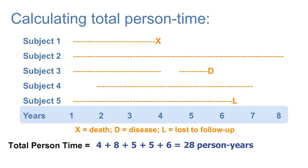So, all in all, subject 3 contributes 5 person years. Subject 4 contributed 5 years of person time. Subject 5 contributed 6 years of person time before becoming loss to follow-up. So, if we sum all of this person time, we get 28 total person years.